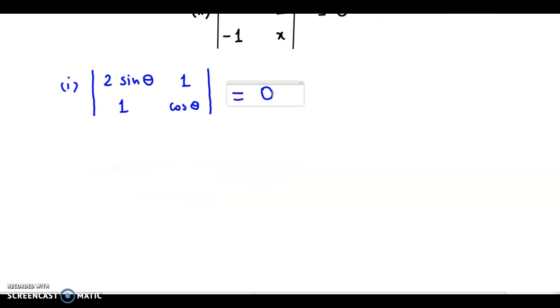Now let us expand this. So we have 2sinθ into cosθ minus 1 into 1, so that's 1, is equal to 0.